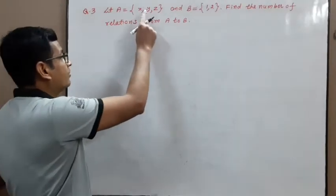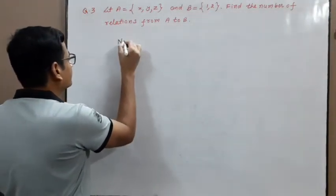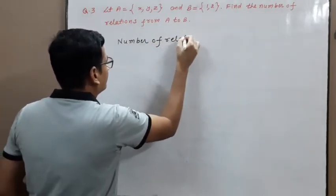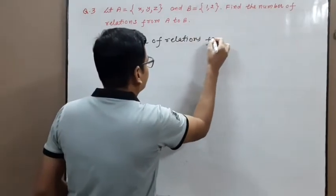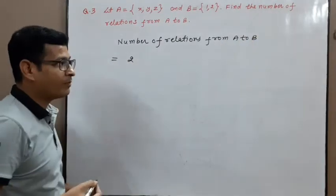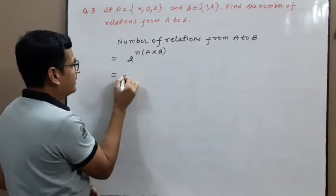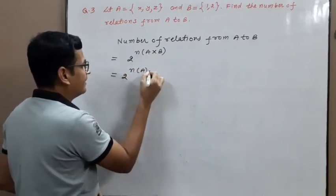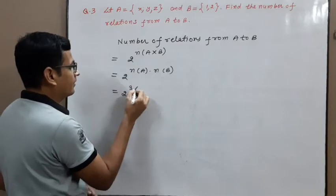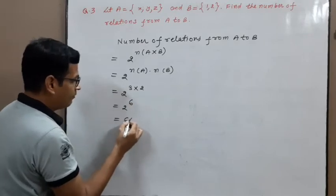Next problem: given sets A and B, find the number of relations from A to B. Number of relations from A to B equals the number of subsets of A cross B, which is 2 raised to the power |A cross B|, meaning |A| times |B|. With 2 elements in A and 3 elements in B, we get 2 raised to the power 6, which equals 64.